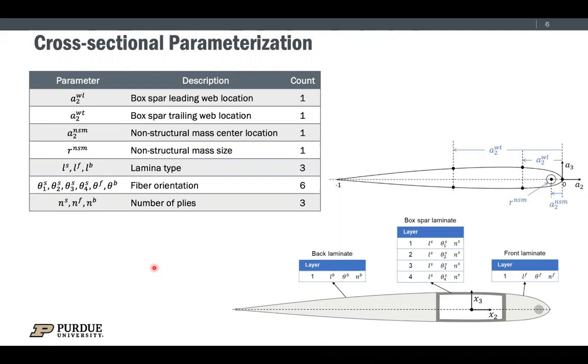Here are the design parameters of a single cross-section. For this example, we will design the box spar leading web and trailing web location. We will also design the non-structural mass center and the corresponding size. Finally, we will also optimize the type of composite laminate, the fiber orientations for each ply, and the number of plies of the laminate.